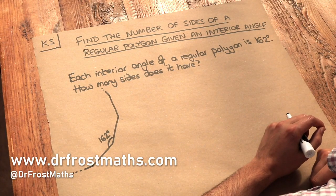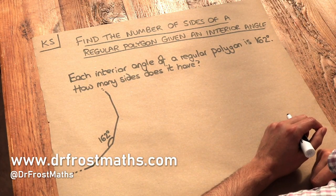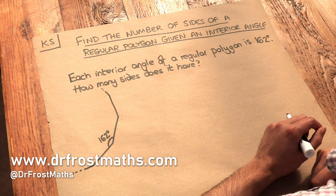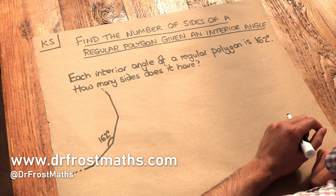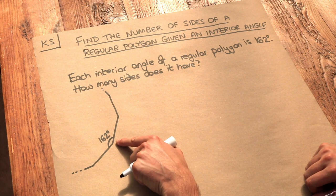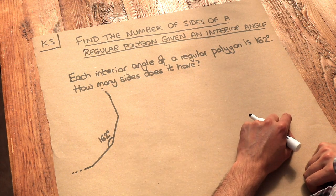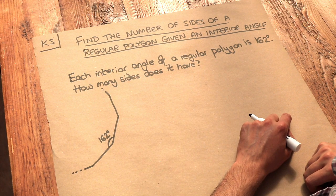Hello and welcome to this Dr. Frost Maths key skill video on finding the number of sides of a regular polygon given an interior angle. So we've got this problem here: each interior angle of a regular polygon is 162 degrees, how many sides does it have?